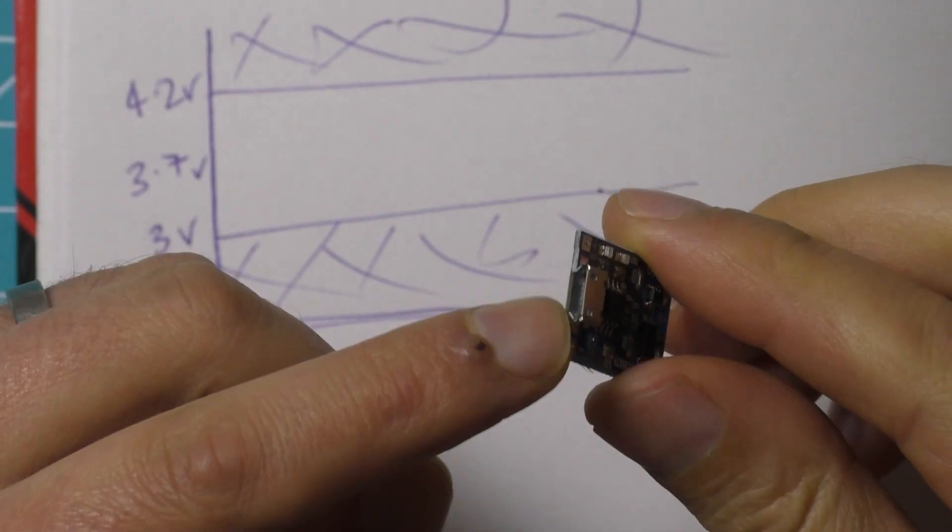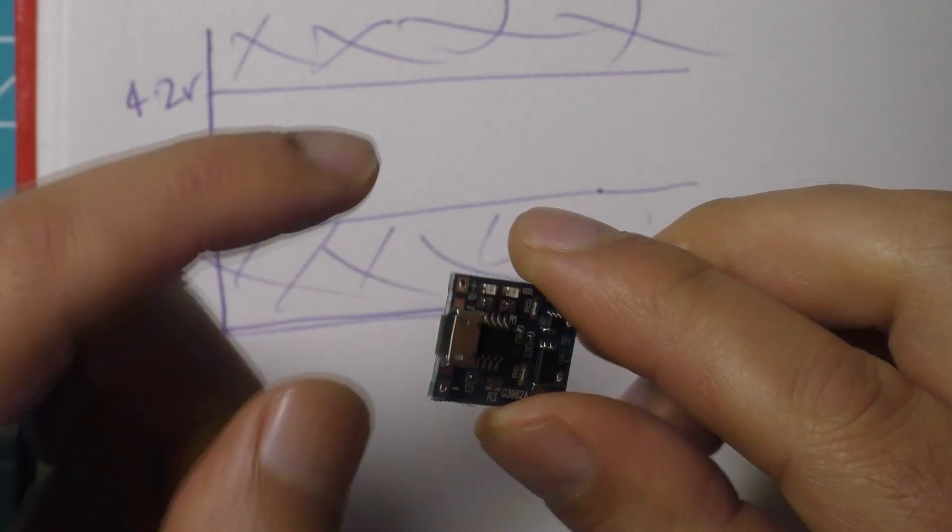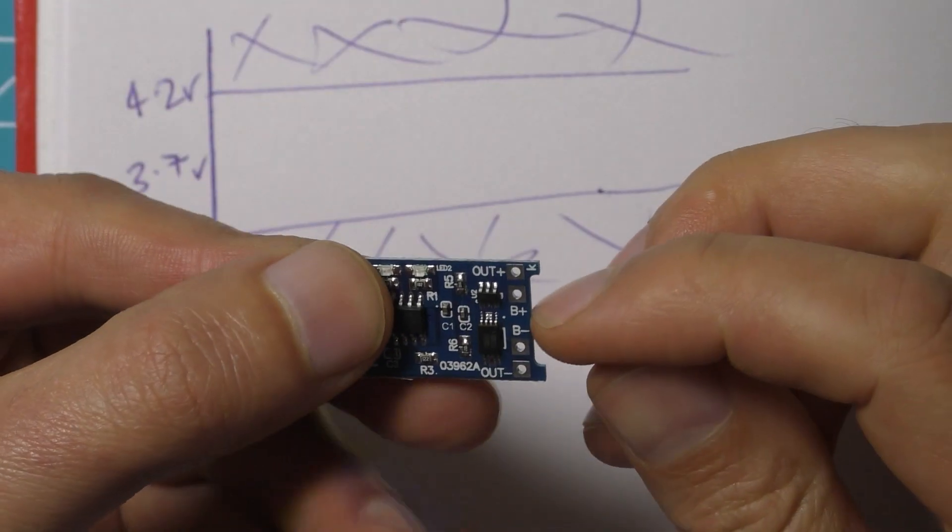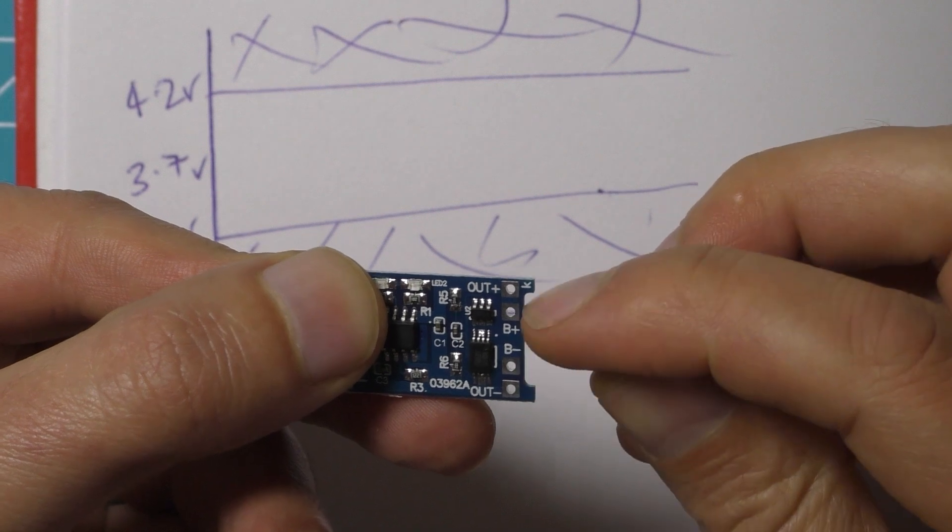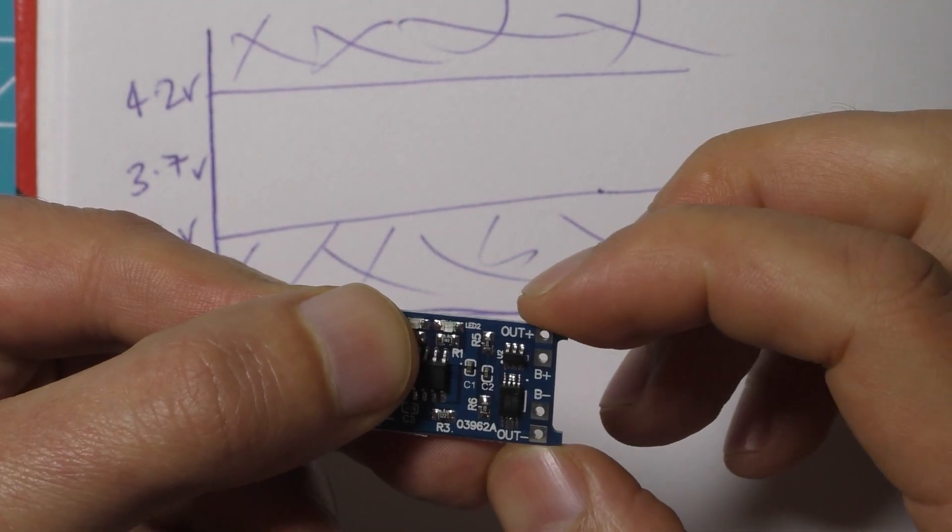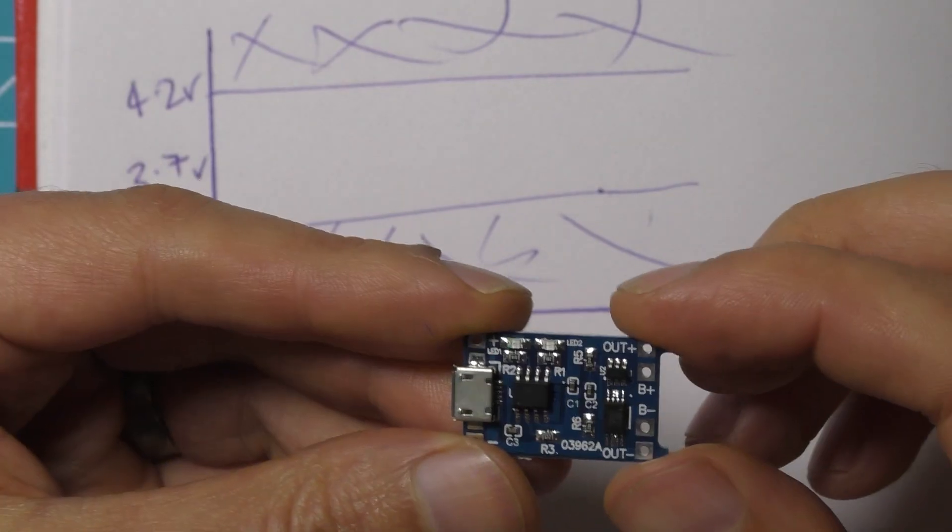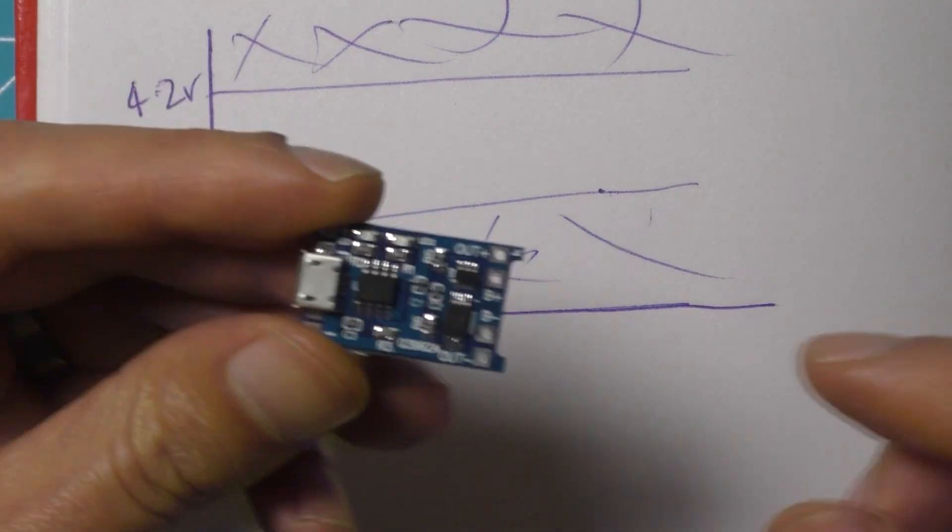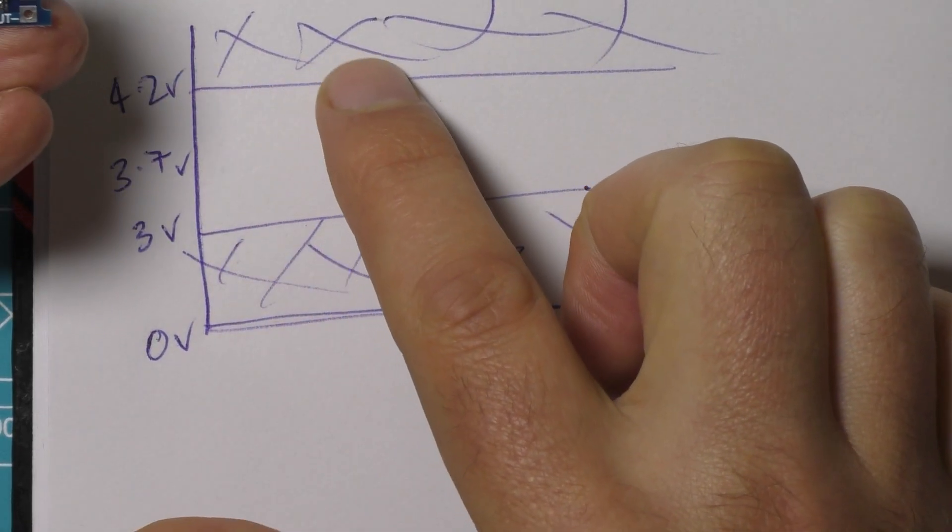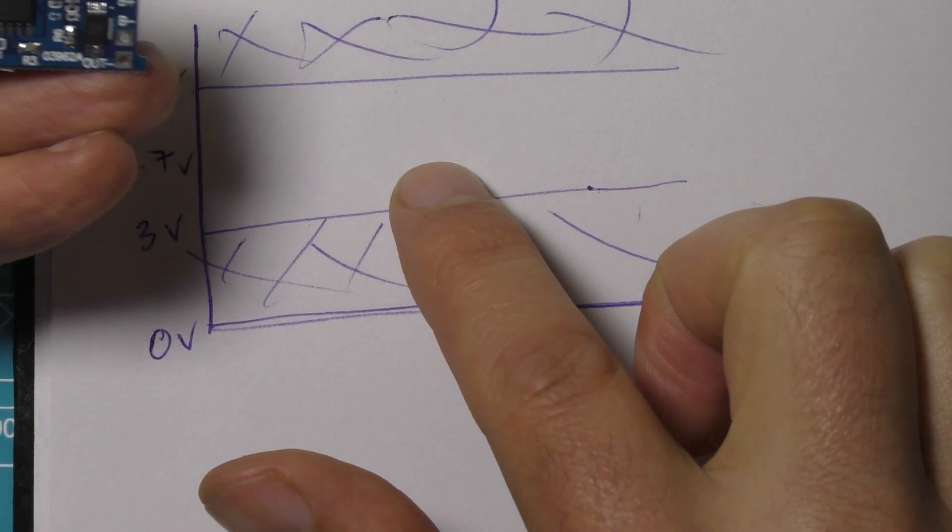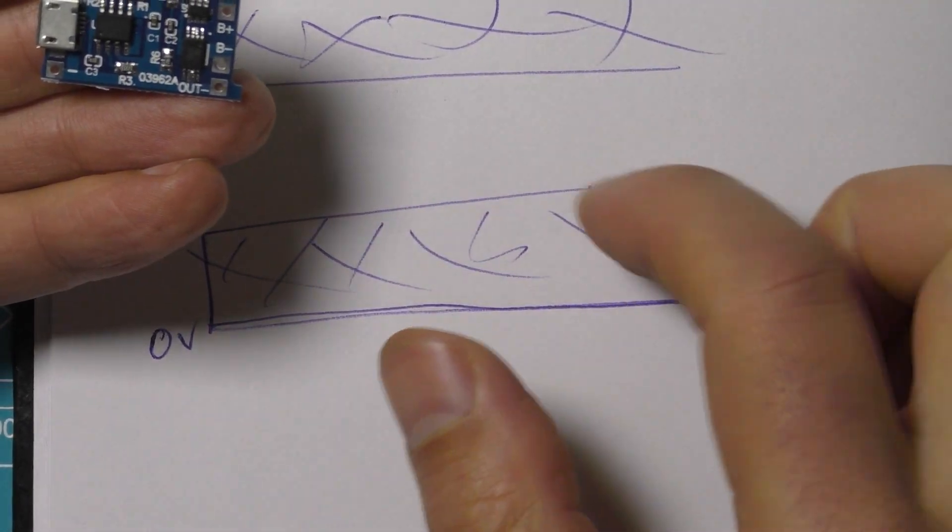They've got a USB port there to connect a charger so that'll be 5 volts going in there just from a normal USB cable. Then they've got two terminals here marked B that you connect to the battery and then two terminals called out plus and minus that you connect to whatever source you want to power. This takes care of all of this for you. When it charges it will stop at 4.2 volts. When it discharges it will stop discharging at 3 volts and it limits the current going in or out to 1 amp.